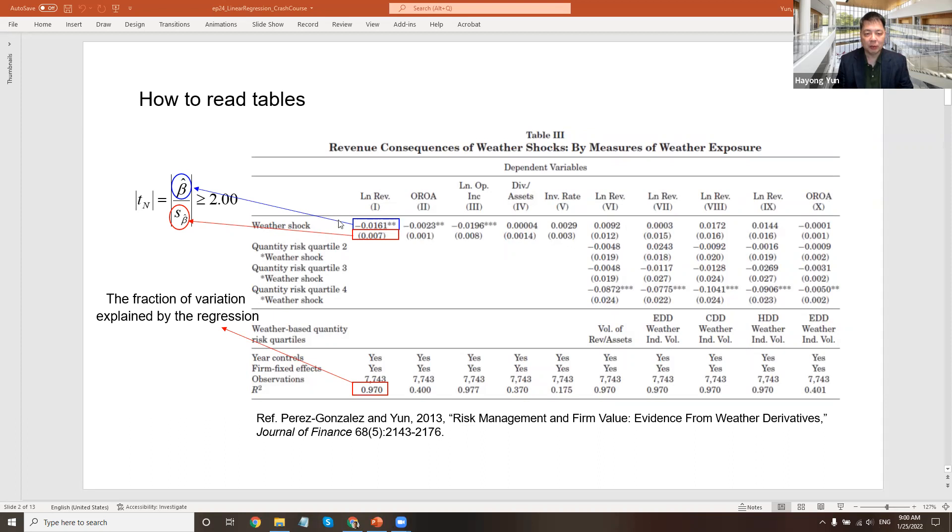The first one is the parameter estimate. This is how much the log revenue is related to the weather shock. It's sort of like the sensitivity. So one unit of weather shock increasing, the log revenue decreases by 0.0161 in this case. So this is the estimate, how it depends on the correlation.